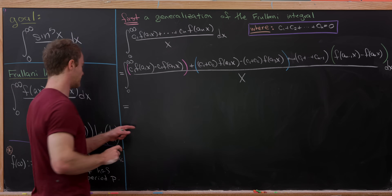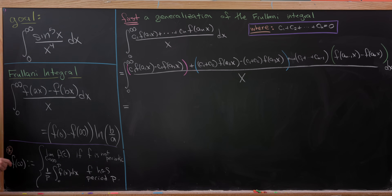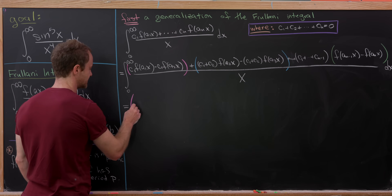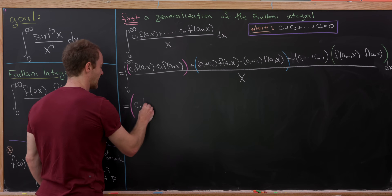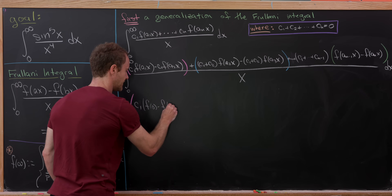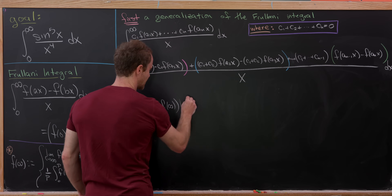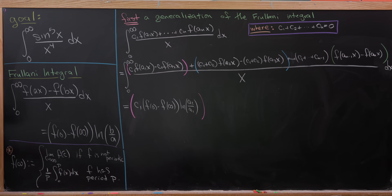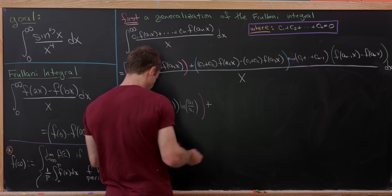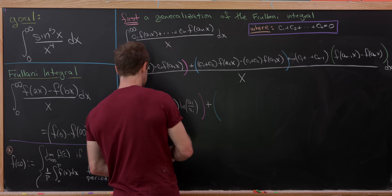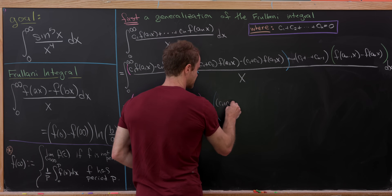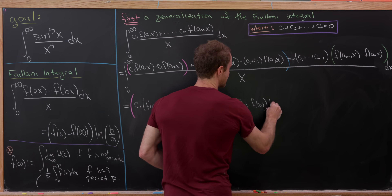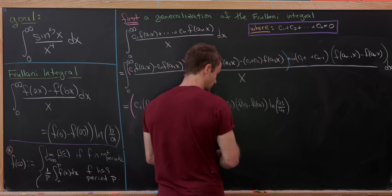That means we can apply the Frulani rule to all of these groups. From the magenta parentheses we get c₁ · [f(0) − f(∞)] · ln(a₂/a₁). From the blue parentheses we get (c₁ + c₂) · [f(0) − f(∞)] · ln(a₃/a₂). And that pattern continues to the last group, which contributes (c₁+…+c_{n−1}) · [f(0) − f(∞)] · ln(aₙ/a_{n−1}).